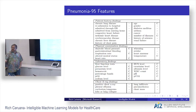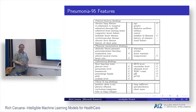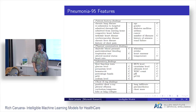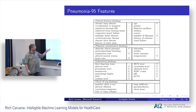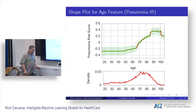Our model only does interesting shaping on continuous features. If you've got Boolean features, it is just logistic regression, which I think is a good thing — it becomes what people are used to. It's only going to do interesting stuff on the continuous features. These are the continuous features in the pneumonia dataset, marked with C's. You can see that right away half the variables in the pneumonia dataset are Boolean, so nothing interesting is going to happen there.